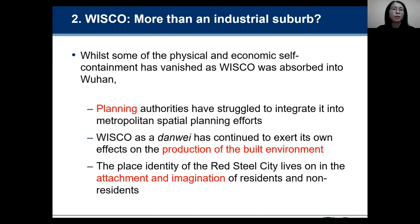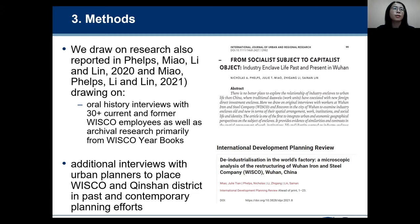We will explain these three points in the empirical part. For methods, we basically use qualitative methods for this research. We have two sources of data. First, oral history interviews with more than 30 current and former Wisco employees, as well as archival research — we have already published two papers based on this data source. We also did additional interviews with urban planners to place Wisco and the Qingshan district in past and contemporary planning efforts to understand the peripheral centrality relations.